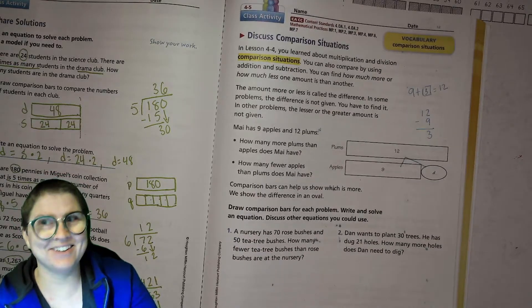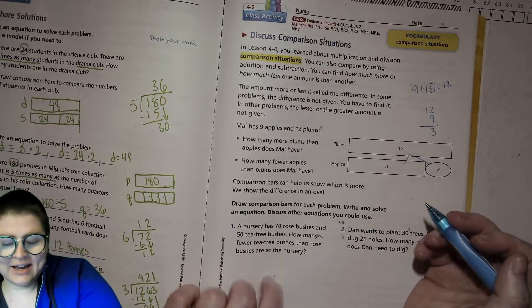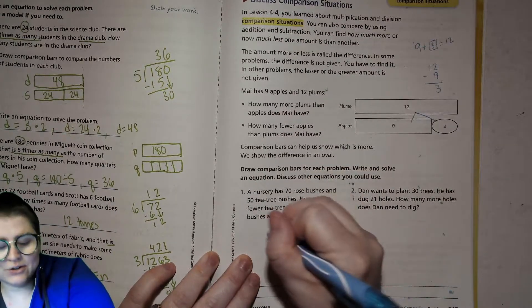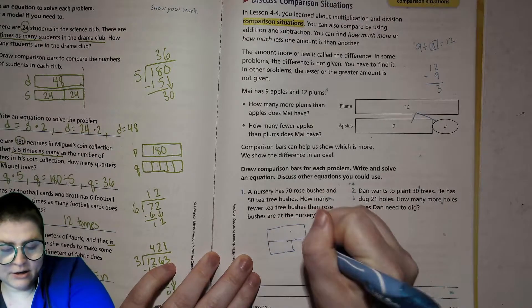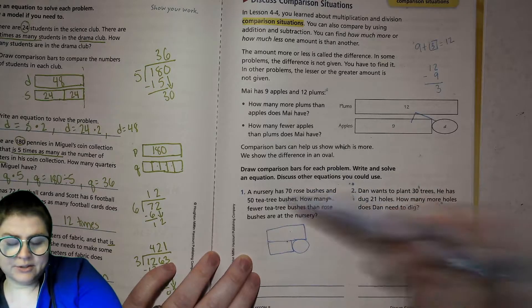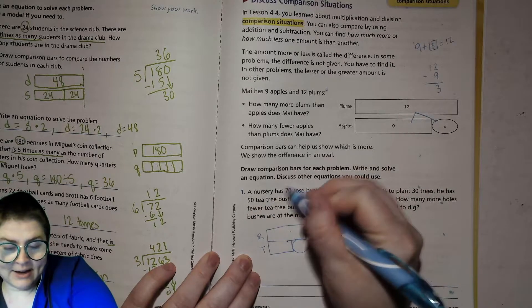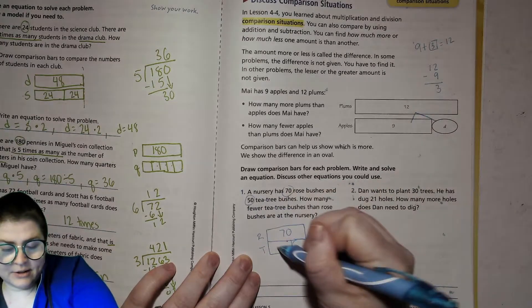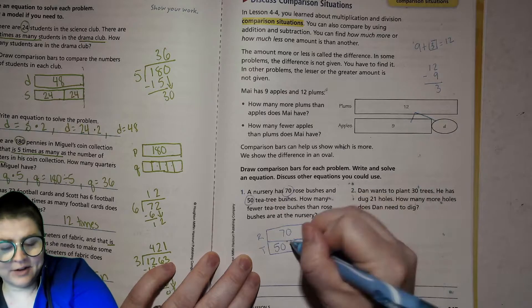I'm going to do this one with you. A nursery has 70 rose bushes and 50 tea tree bushes. How many fewer tea tree bushes than rose bushes are at the nursery? Every time you're doing one of these you're going to have a big bar, a little bar, and a bubble. What's more, rose or tea tree? You have more rose - they get the big bar. What they have goes in their bar: 70. The other number goes in the other bar, 50, because that's what they have. We're looking for that difference.